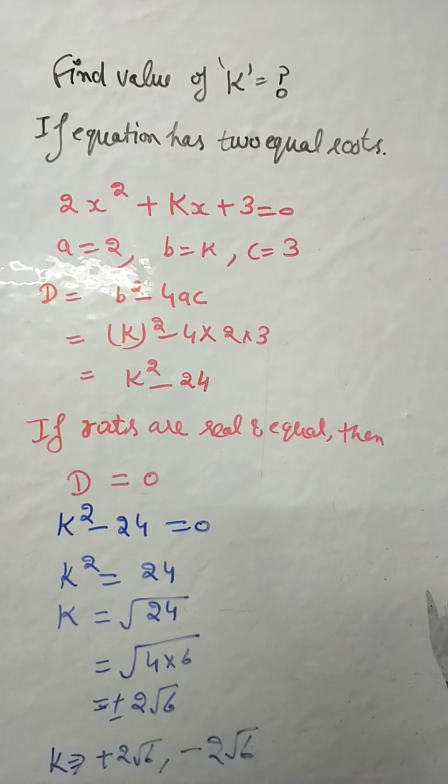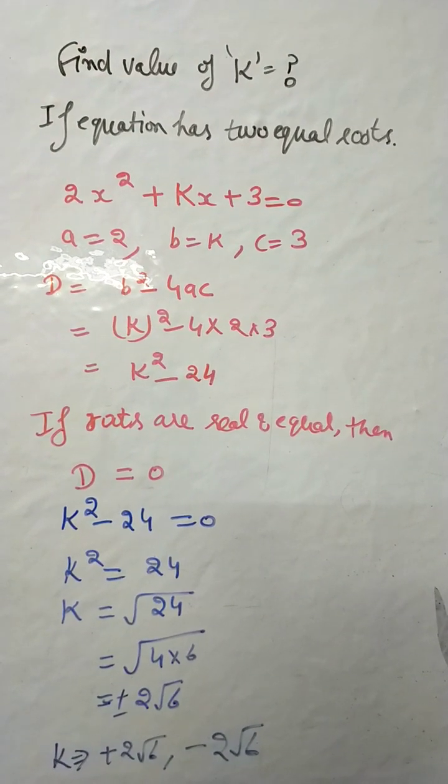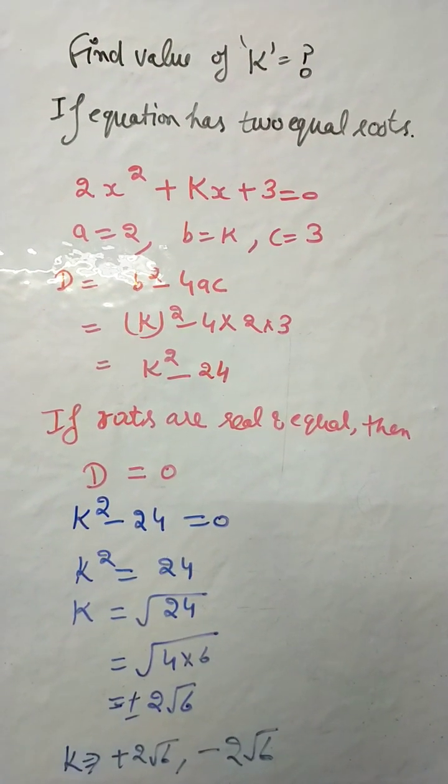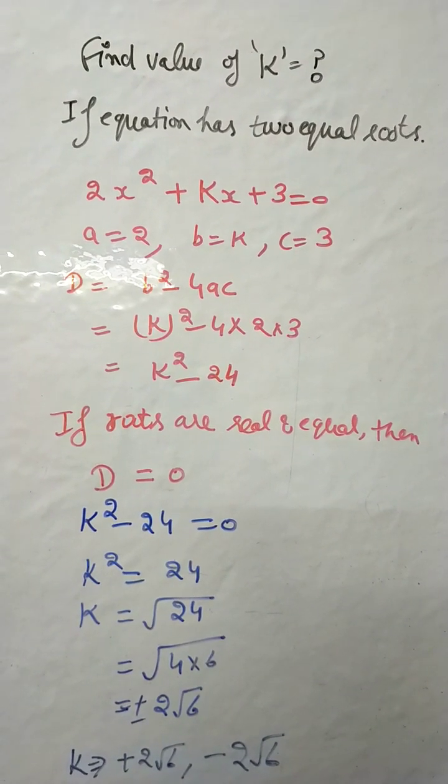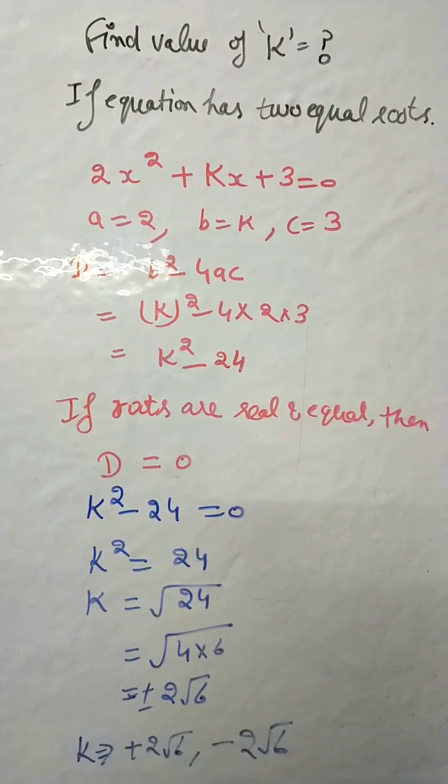We know a = 2, b value is k, and c = 3. First, we find b² - 4ac equal to D. The value of D is k² - 24.